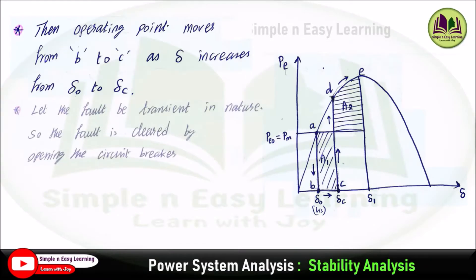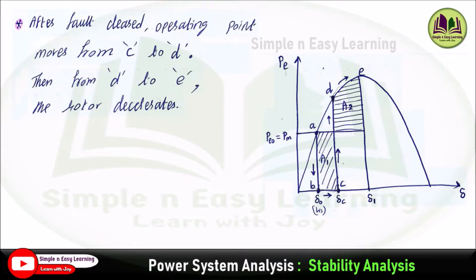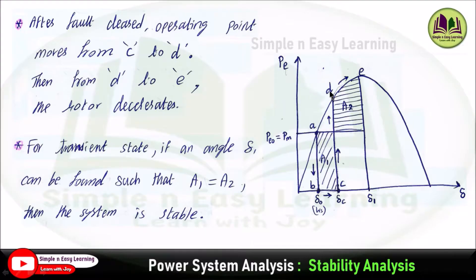The operating point further moves from point B to point C as del increases from del_naught to del_c. Assuming the fault is transient in nature, the fault is cleared by opening the circuit breaker. At point C, the fault is cleared; the angle is del_c and the time at this point is t_c — called the clearing angle and clearing time respectively. After the fault is cleared, the operating point moves from C to D, then from D to E, where the rotor starts to decelerate. For the transient state, if angle del_1 is chosen such that area A1 equals area A2, this is the equal area criterion, and the system is stable.